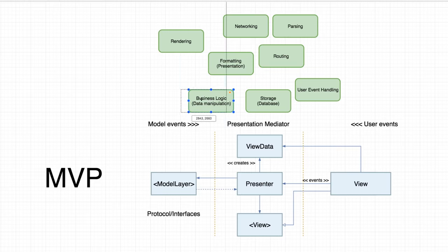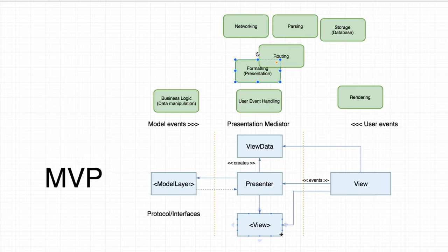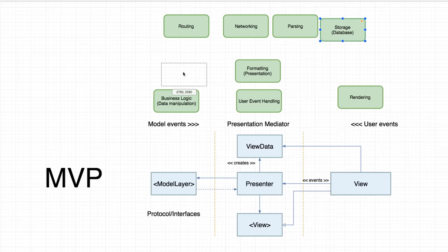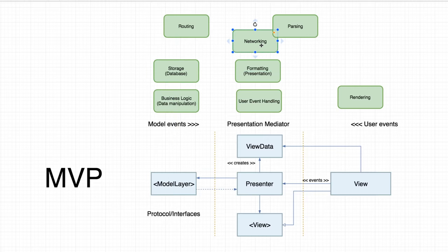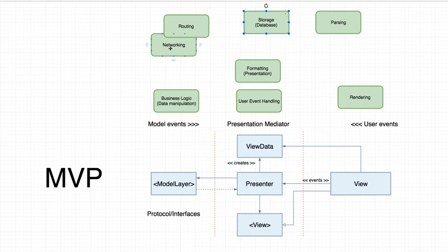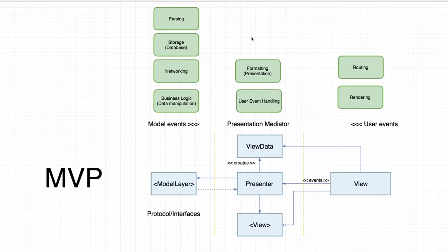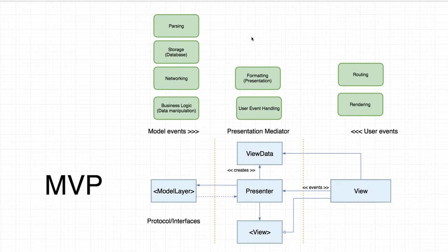In MVP, business logic stays in the model layer behind interfaces, rendering stays on the view side, and user event handling and formatting go to the presentation layer. Everything else — storage, networking, parsing, routing — has no defined place. There is no optimal separation of concerns here because what MVP is also trying to solve is the user interface and model communication. Whatever combination is made, it will be non-optimal. But all of those patterns are good patterns to organize your user interface layer.